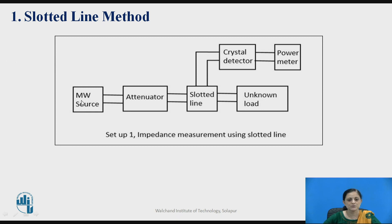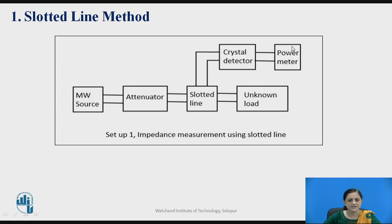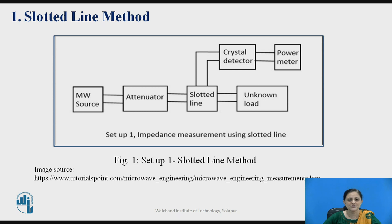In setup one, a microwave source is used to generate and apply the supply. Then an attenuator is used to control attenuation. The signal is then given to the slotted line section, which is connected to a crystal detector to detect the output. The output can be measured on a power meter directly, or you can connect a CRO to observe the waveform. The unknown load is connected to the other port of the slotted line section.